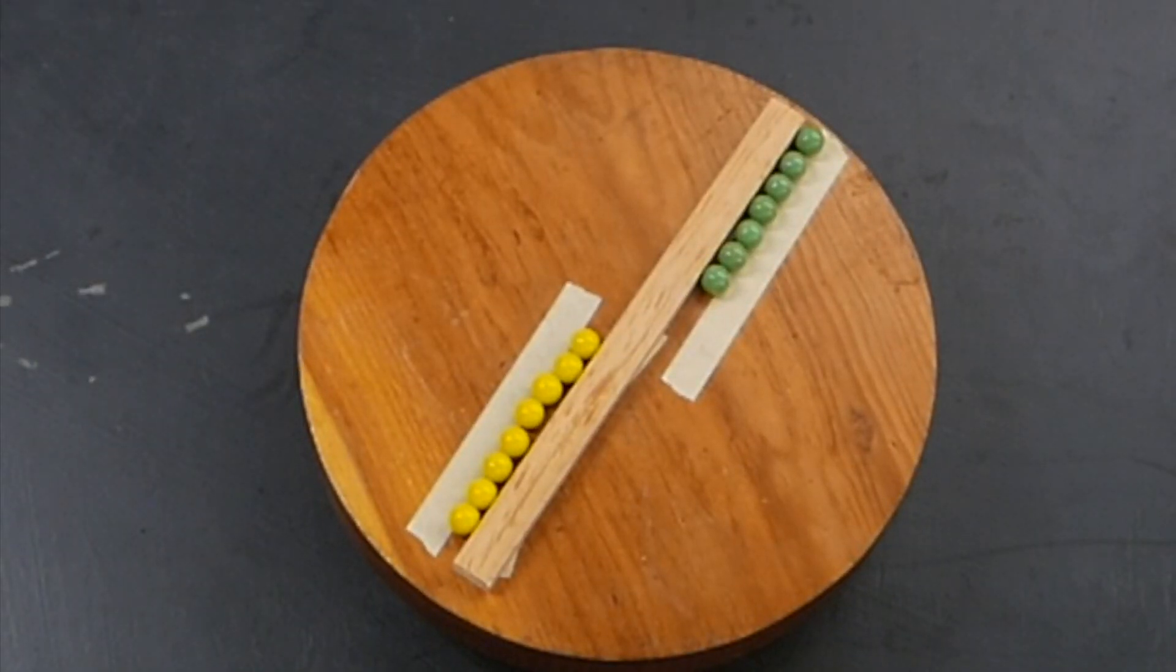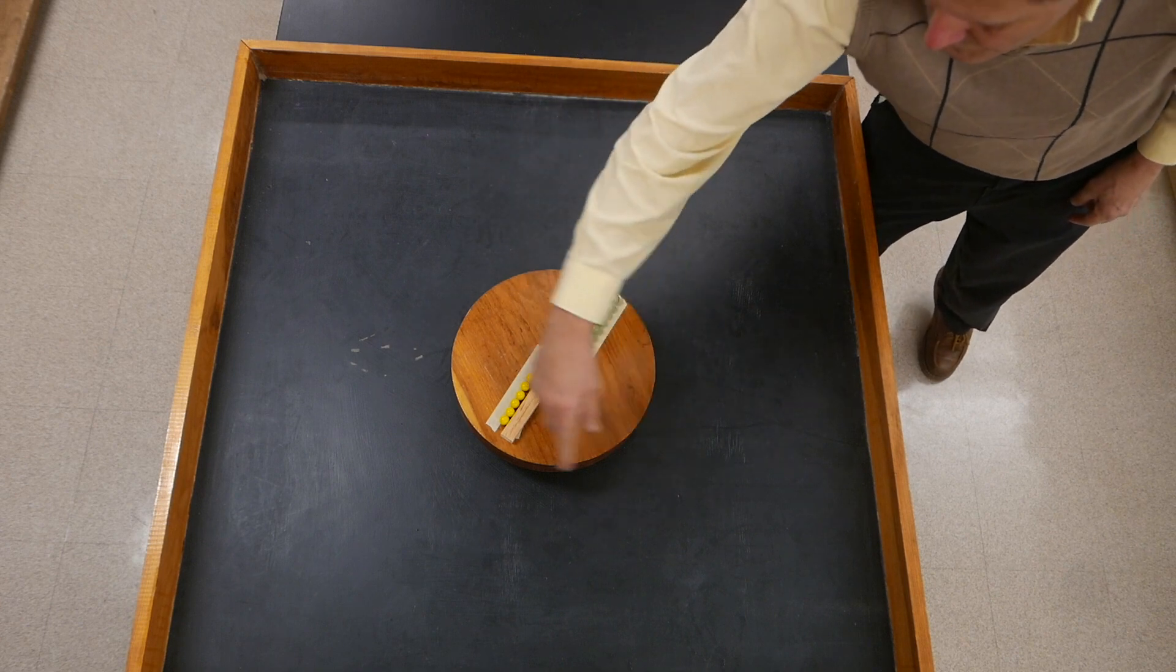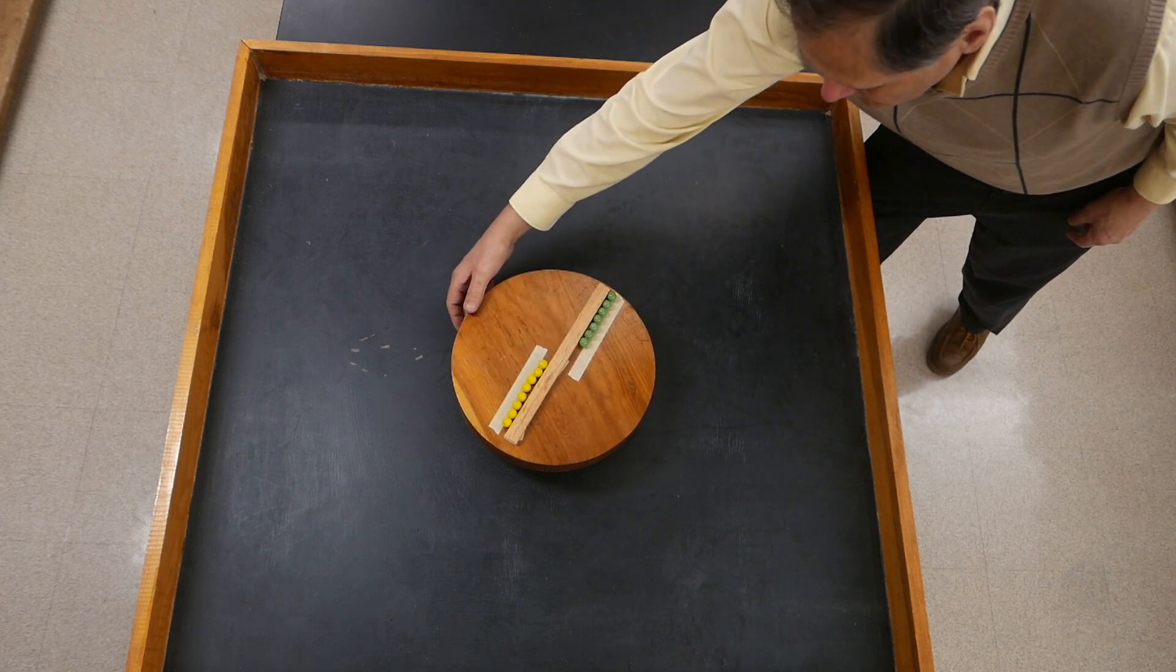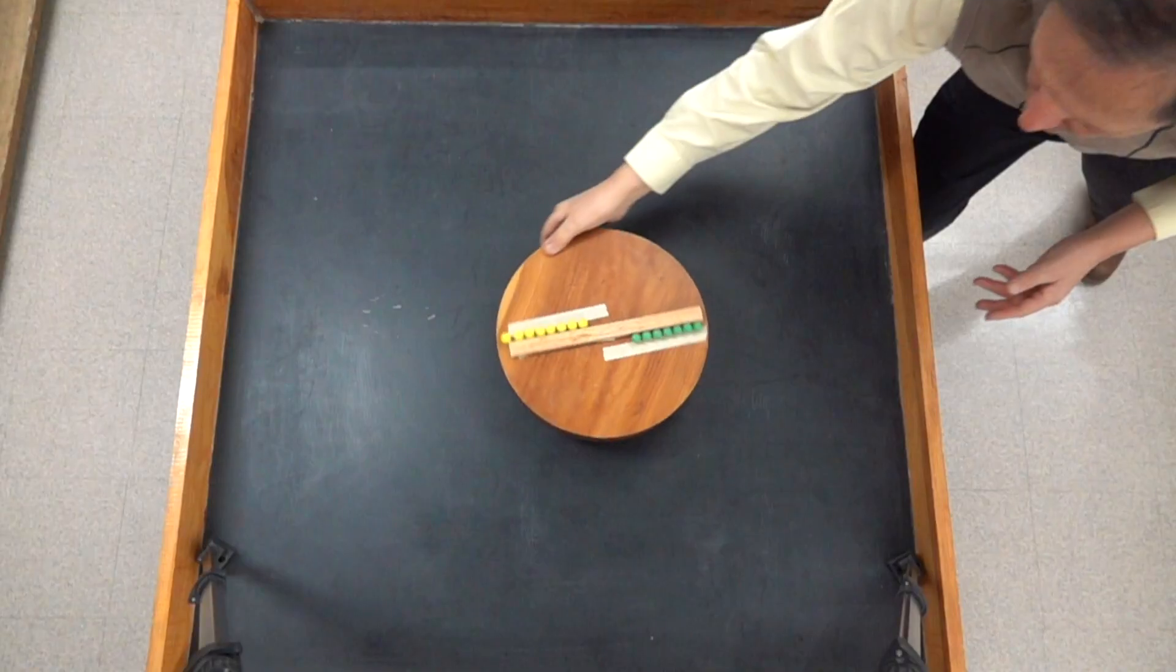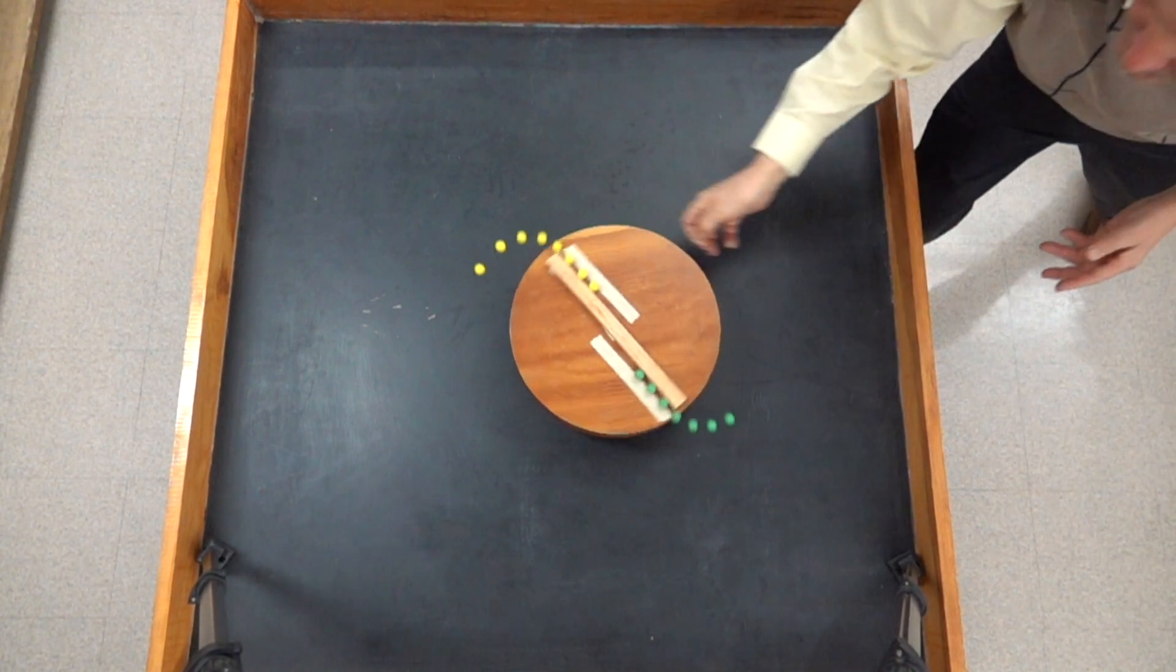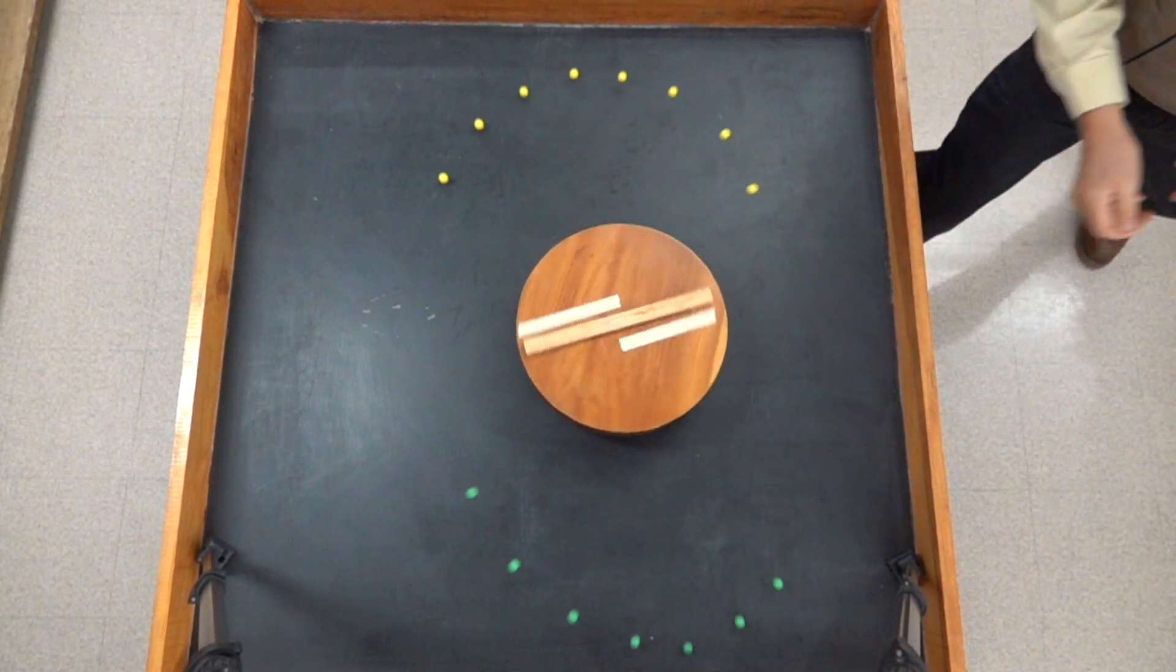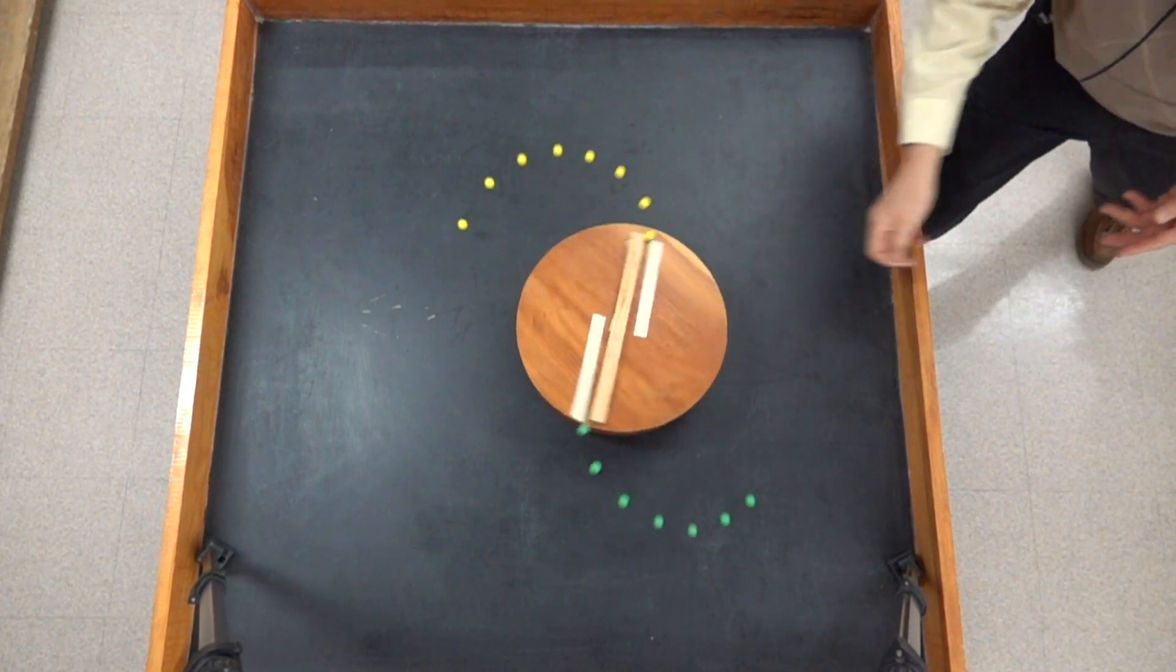For a short time the marbles will be forced into a circular path, but when they reach the end of that stick then they're going to move in a straight line. I'm going to give this a clockwise spin and off they go. Here in slow motion we can see that same behavior. Once free of the spinner there's no centripetal force acting on each marble so they move in a straight line due to inertia.